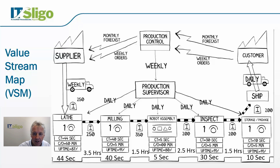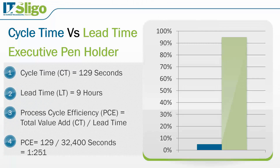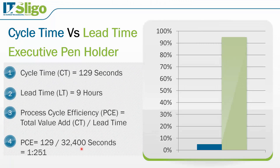Going back to an earlier lecture, we looked at cycle time and lead time, or value add versus non-value add. In this case, our total cycle time is 129 seconds and our lead time from the value stream map is 9 hours. Converting 9 hours to seconds gives 32,400 seconds. There's a lean measurement called process cycle efficiency, which is total value add time divided by lead time — giving a ratio of 1 to 251. World class can get that down to 10 to 1, or even 25 to 1.